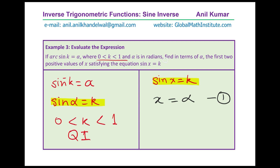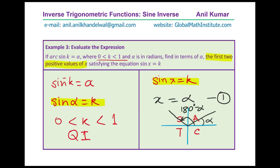For positive values of sine, using the CAST rule, sine is positive in quadrant 1 and quadrant 2. Therefore, if alpha is the first value, then the second positive value is pi minus alpha — since we are working in radians. So we have x equals alpha and x equals pi minus alpha as the two values. The related acute angle for both is alpha.